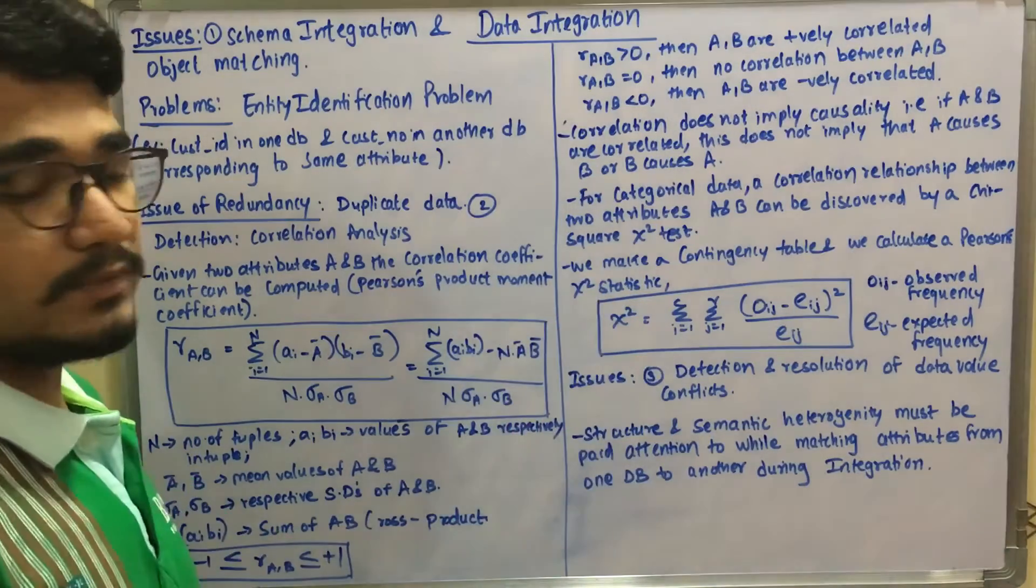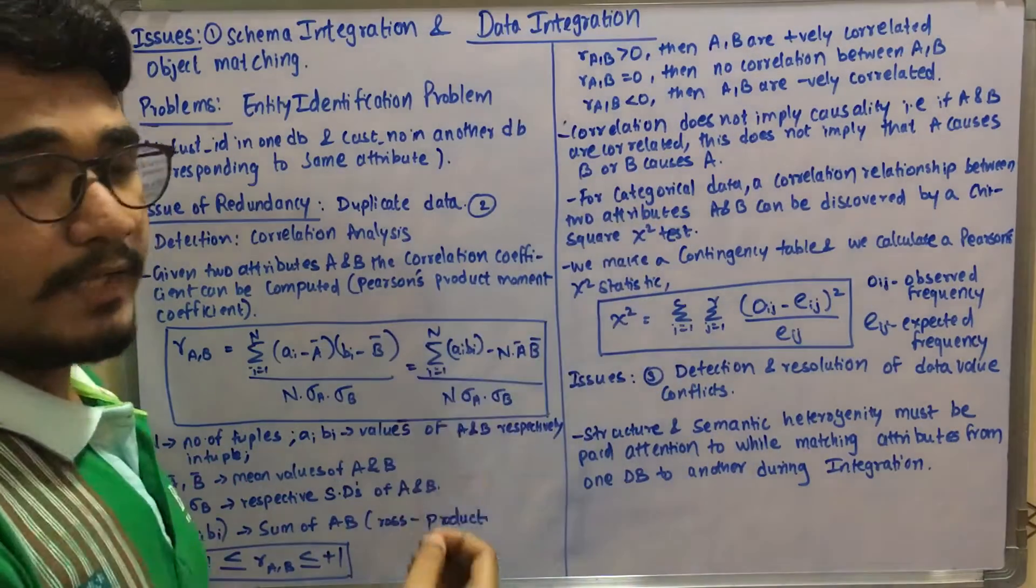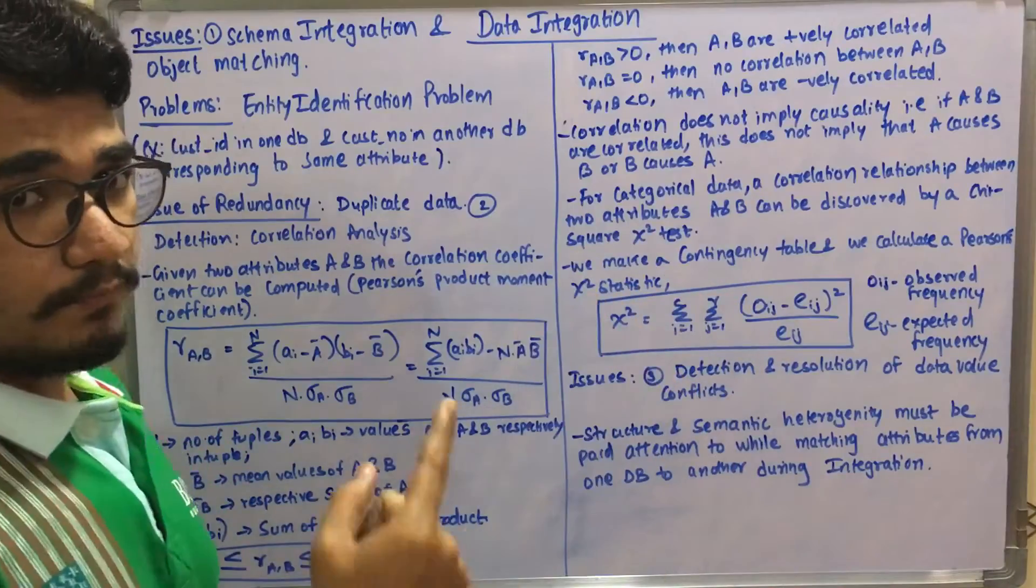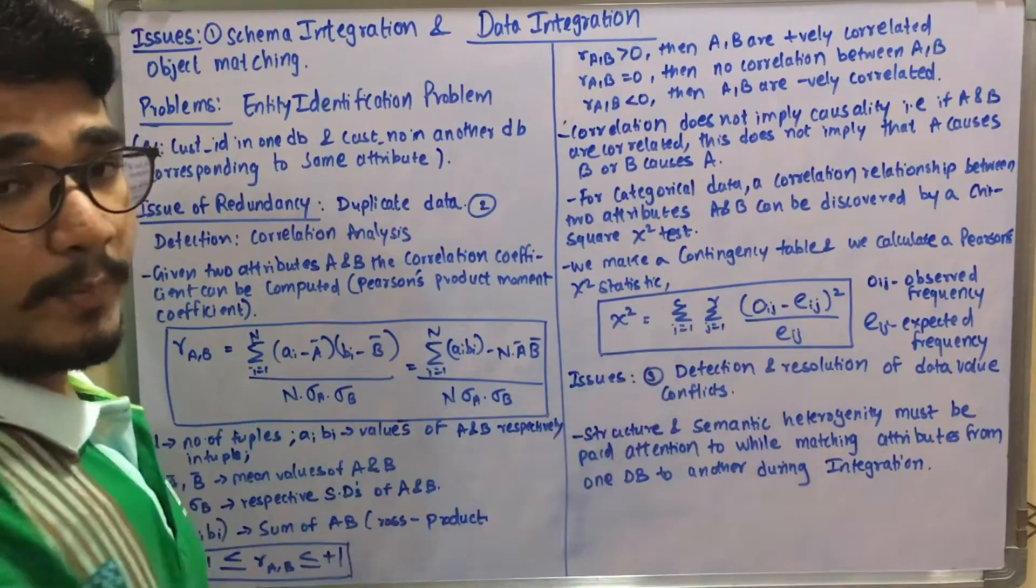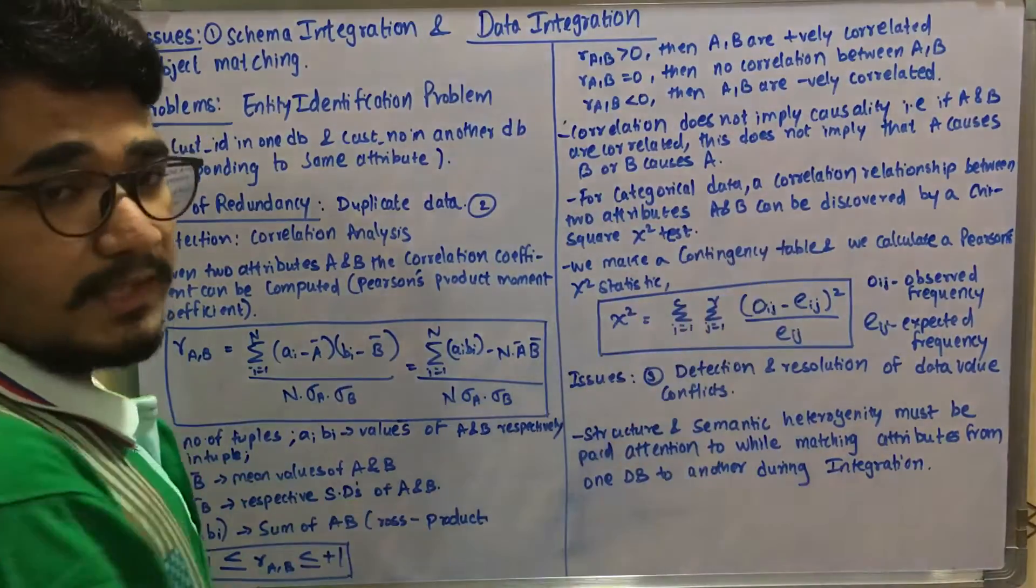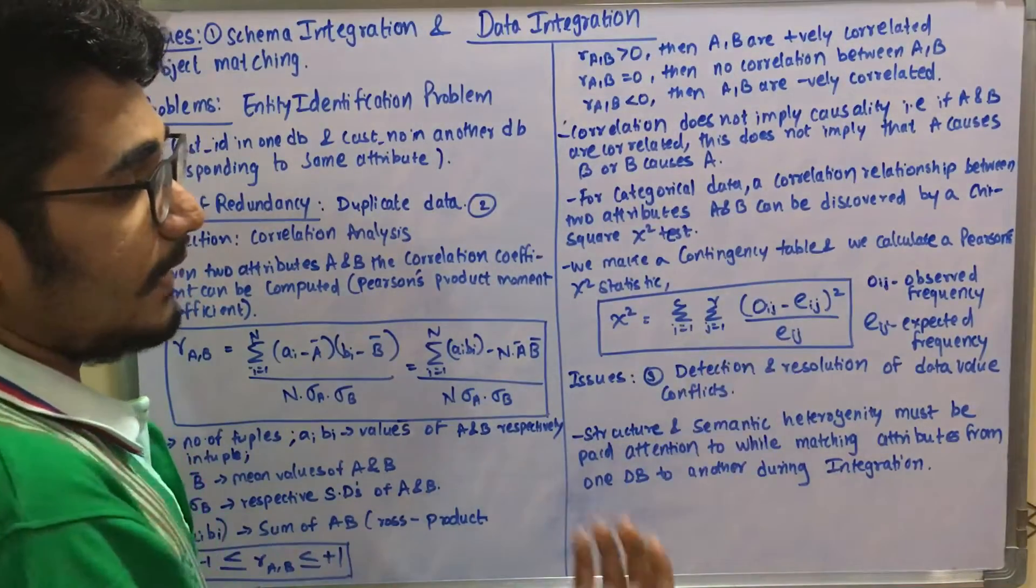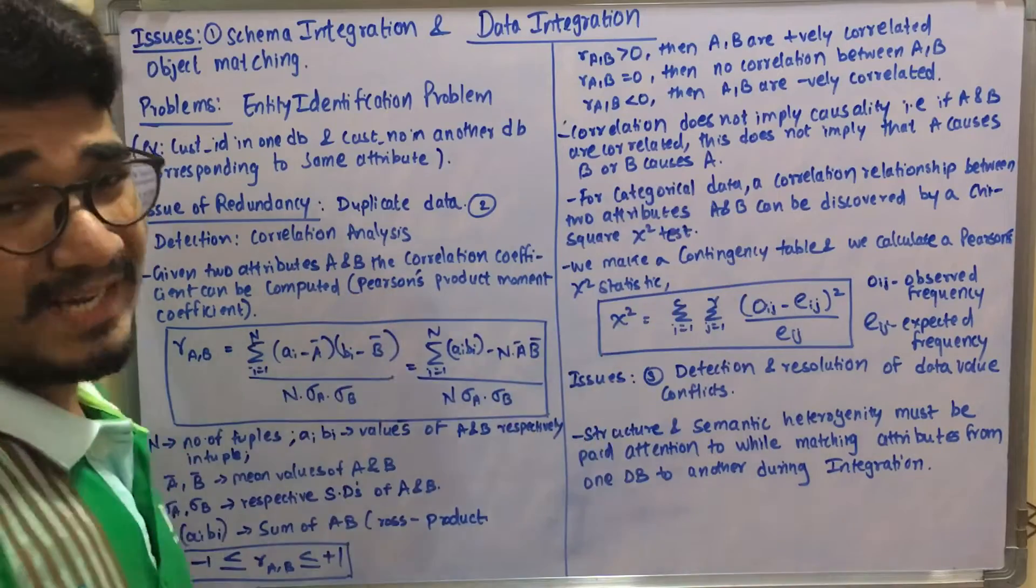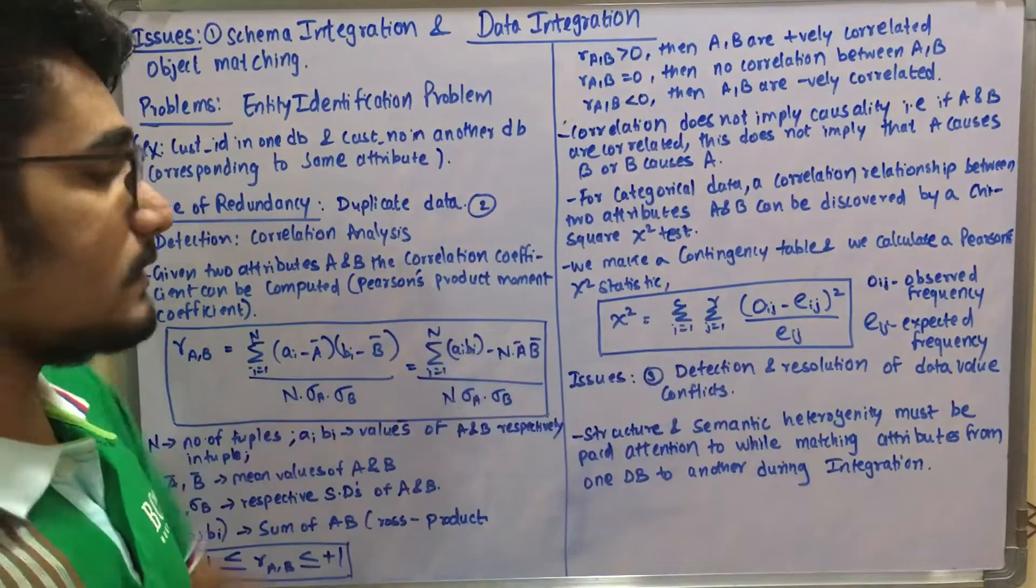We calculate Pearson's chi-square statistic, given by: χ² = summation i from 1 to c, summation j from 1 to r of (O_ij - E_ij)² divided by E_ij, where O_ij is observed frequency and E_ij is expected frequency.